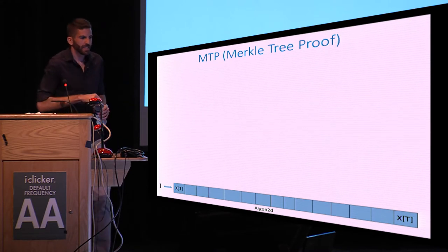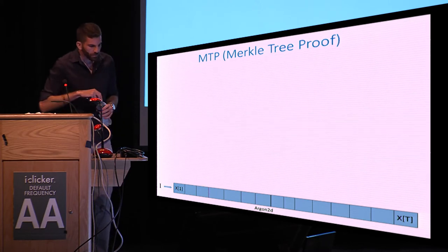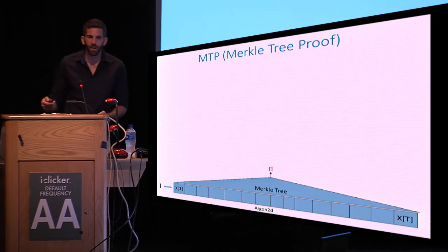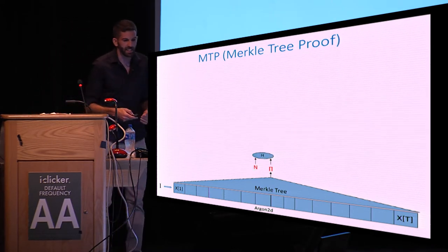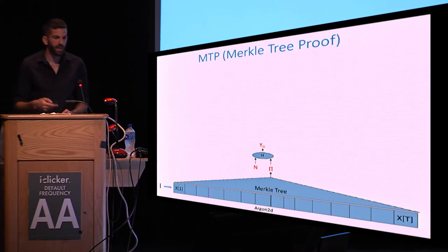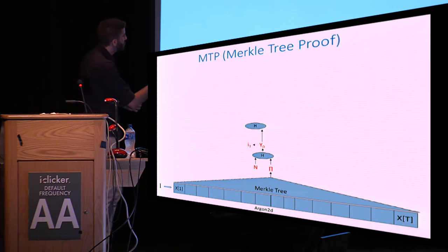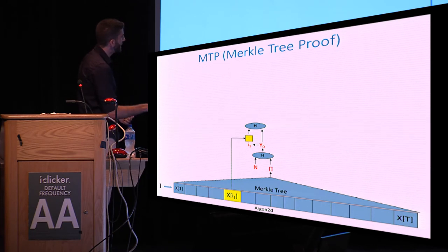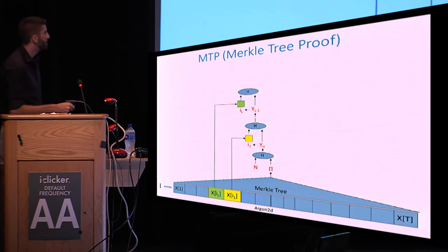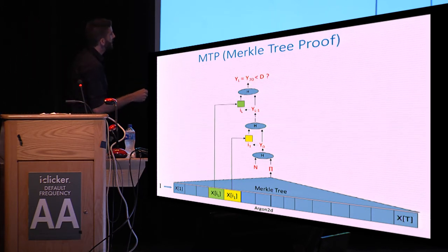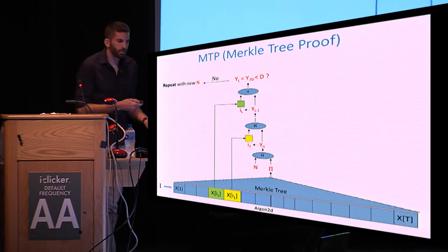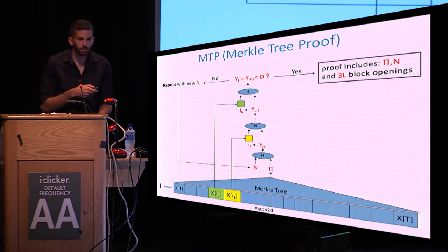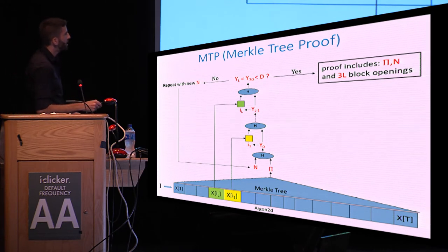Now we describe the prover's algorithm in MTP. The prover starts by computing the Argon2D function and building the Merkle hash tree to obtain a commitment pi. Then the prover chooses a random nonce n and starts computing a series of pseudo-random values y0, y1, and so on. From each y, the prover derives a pseudo-random index and is required to provide the block at that index. This process continues for L pseudo-random blocks, and as in Bitcoin, the final hash is compared against the difficulty parameter D. If successful, the proof includes the commitment pi, the nonce n, and the openings of 3L blocks.